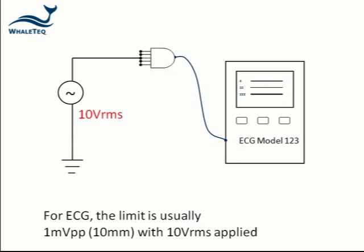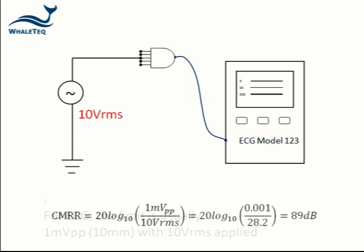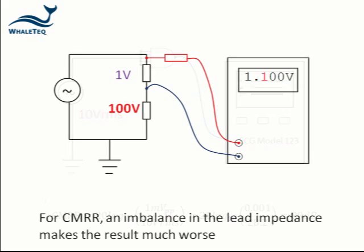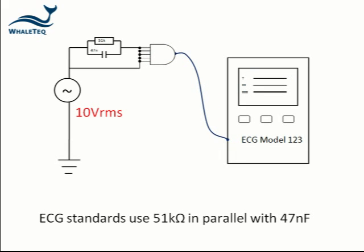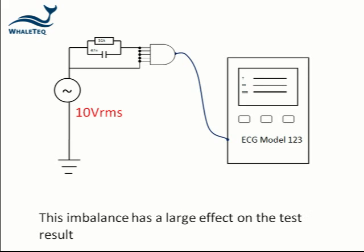In ECG standards the typical requirement is 1 millivolt peak-to-peak indication with 10 volts RMS applied. This calculates to around 89 dB CMRR. It turns out that for CMRR, an imbalance in the impedance in each lead makes the result much worse. Multimeters typically specify a one kilo-ohm imbalance. The ECG standards use a 51k resistor in parallel with 47 nF capacitance to represent connection to the body. This imbalance has a large effect on the test result.